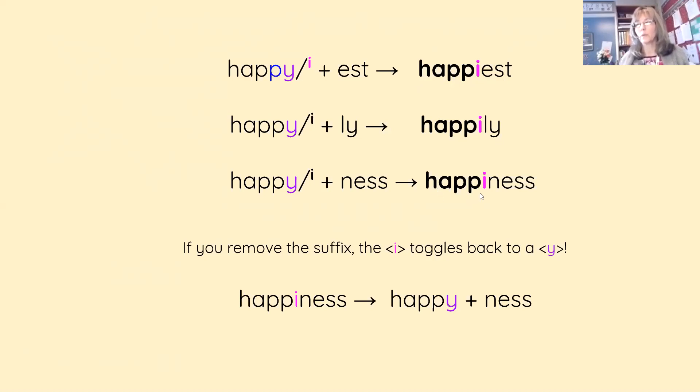The toggle is great because if you start with the bigger word and you remove the suffix, the I toggles back to the Y. If you had happiness and you wanted to know what it was built with, what's the structure, what pieces were put together, you would be able to take your suffix off, N-E-double-S. And you'd be left with happy.